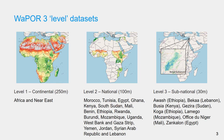Level 3 Subnational has a spatial resolution of 30 meters and is available for only a few selected pilot areas, focusing on irrigation schemes. As you can see on the map, the area available at level 3 is very small compared to level 1 and 2.